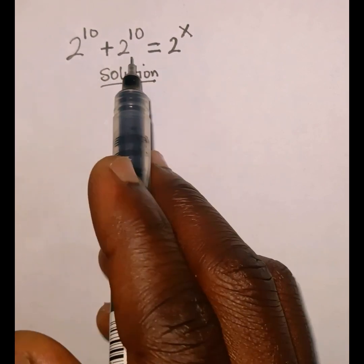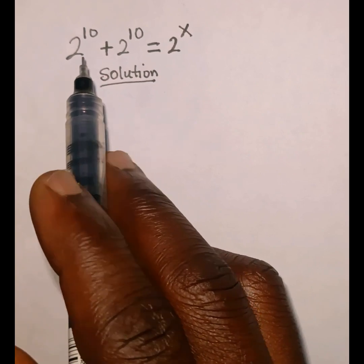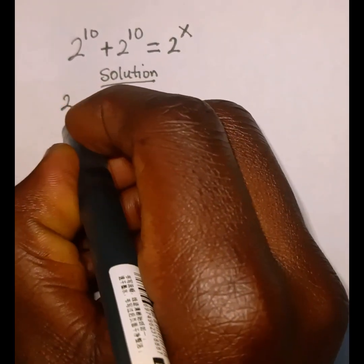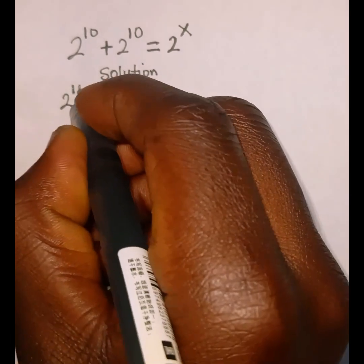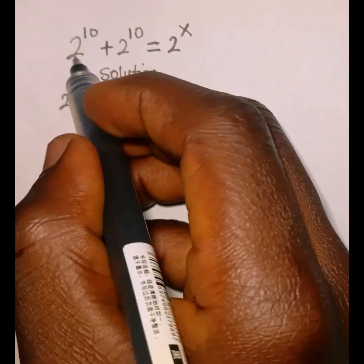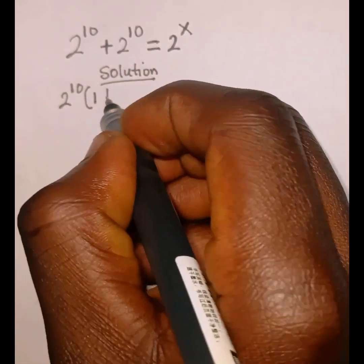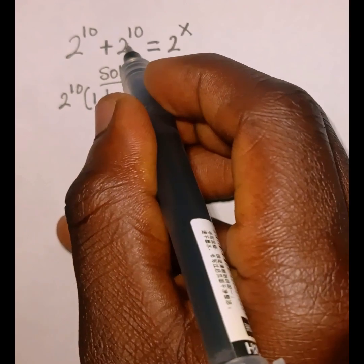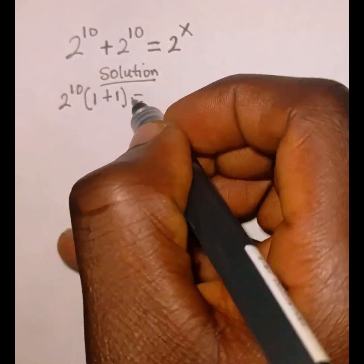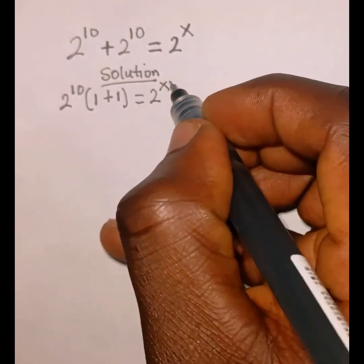If you look at the left hand side of this equation, we are adding the same thing, so 2 to the power 10 is common. We're going to factor out 2 to the power of 10, then open the bracket. So 2 to the power 10 divided by 2 to the power 10 is 1, plus this divided by this is also 1, which is going to give us 2 raised to the power of x.